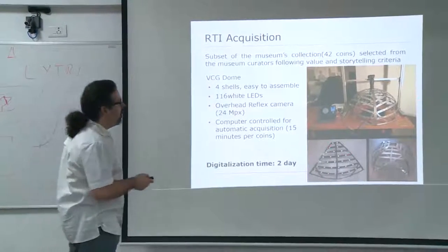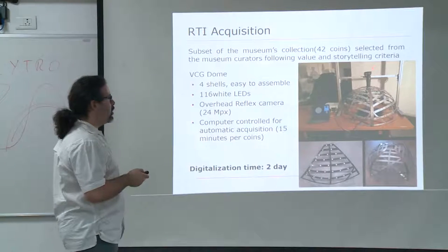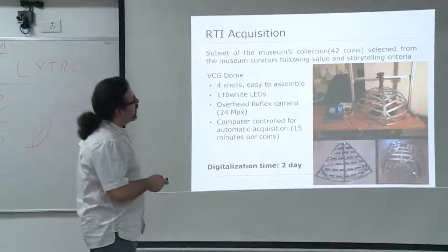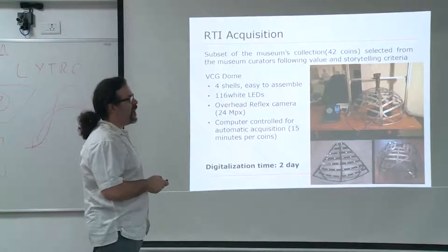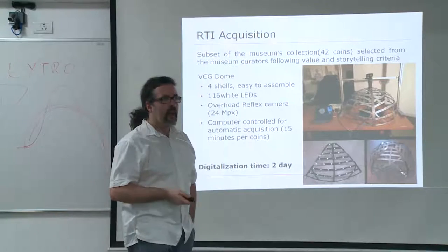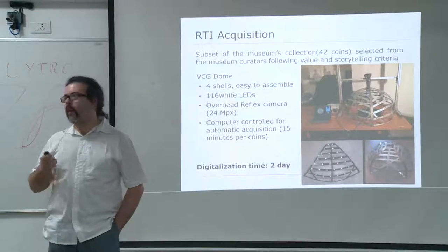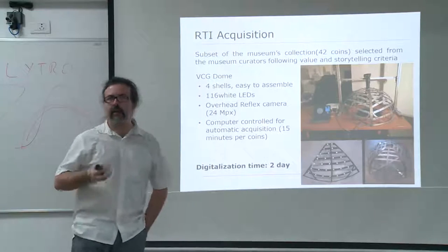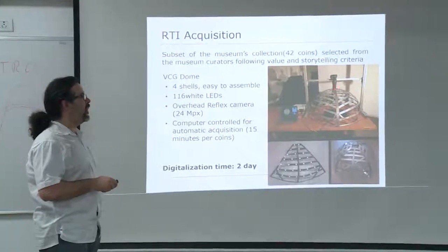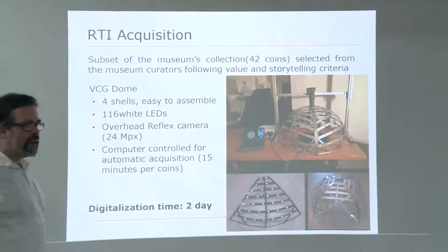We used our scanning rig to get all the data for the coins — we used the overhead setup, a reflex camera with 24 megapixels so the resolution was good. One thing that was absolutely necessary to buy was a macro lens, because you are very close to the object — less than 50 centimeters — and most lenses cannot focus at this distance in a reliable way. Macro lenses are extremely costly because they are heavy with a lot of lenses inside.